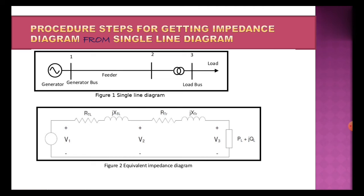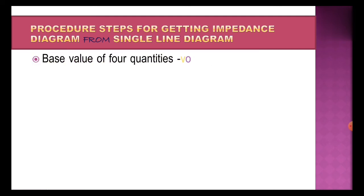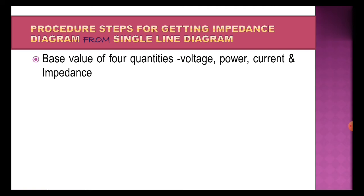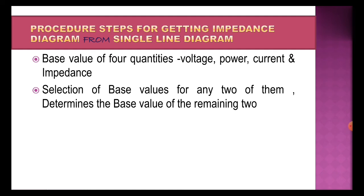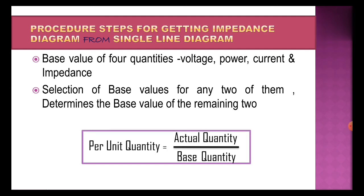The main objective is to observe the procedural steps for getting the impedance diagram from the single line diagram. We observe the basic important points regarding per unit quantities. The base values of four quantities — voltage, power, current, and impedance — are considered. Selection of base values for any two of them determines the base values of the remaining two. The general expression for per unit quantities is: per unit quantity equals actual quantity divided by base quantity.